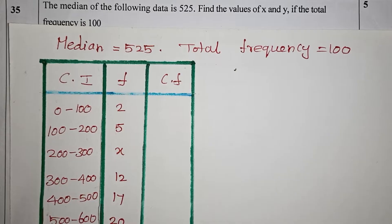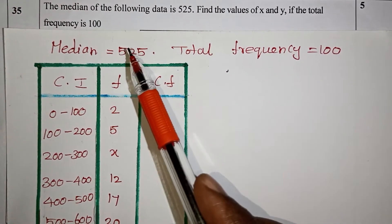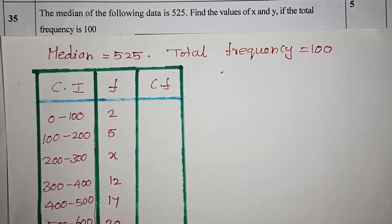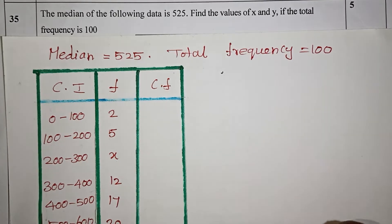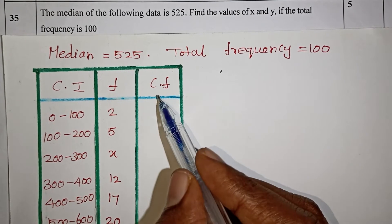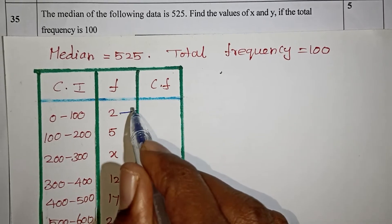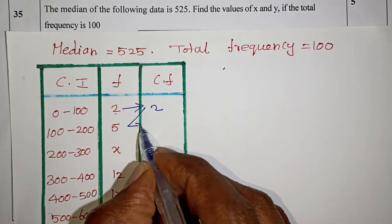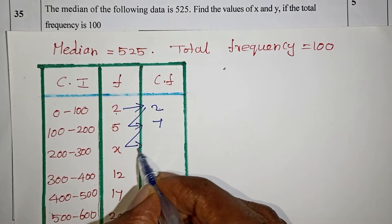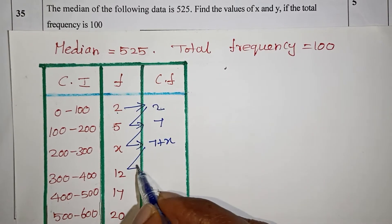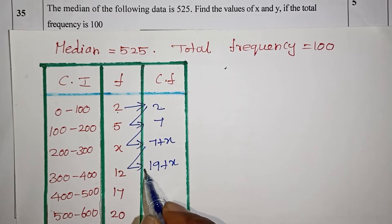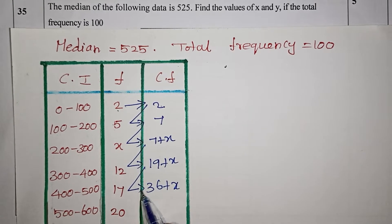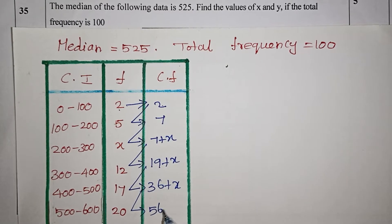So the median value is 525 and total frequency is 100. The cumulative frequency starts at 2; 2 plus 5 is 7; 7 plus x gives 7 plus x; adding 12 gives 19 plus x; adding 17 gives 36 plus x; adding 20 gives 56 plus x.